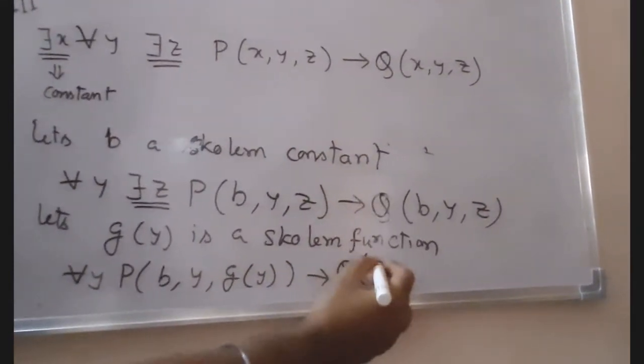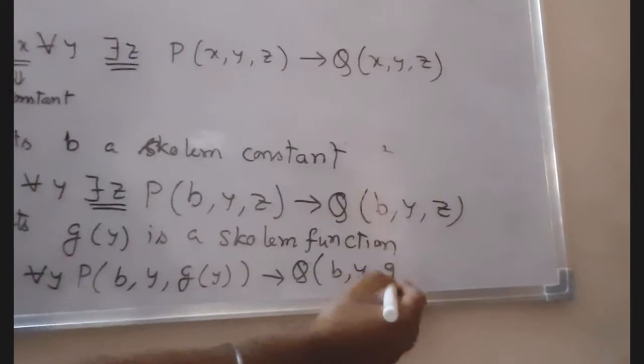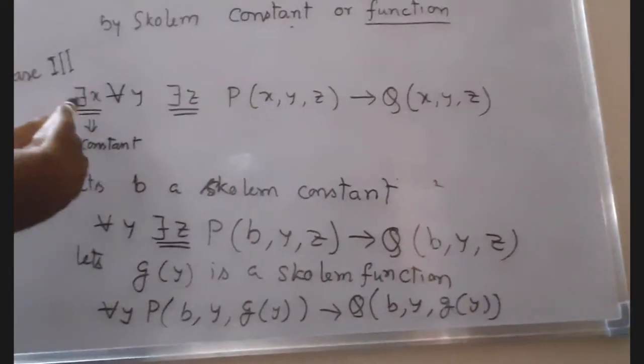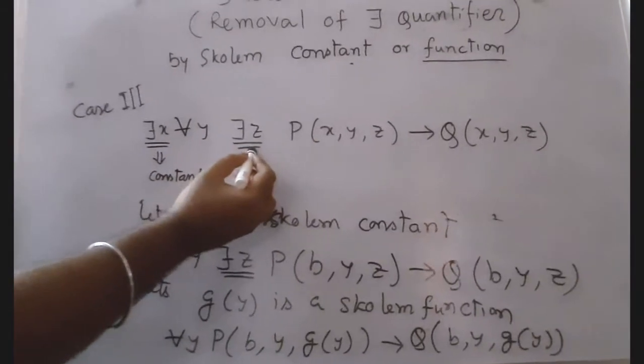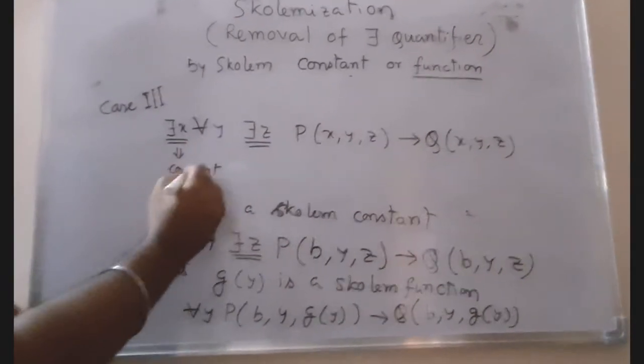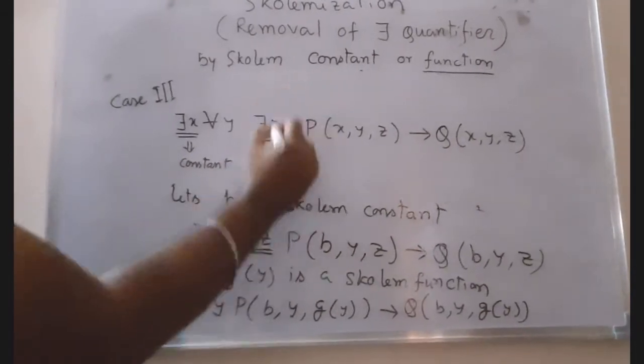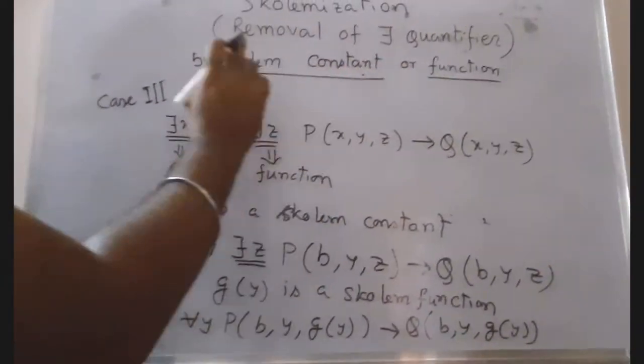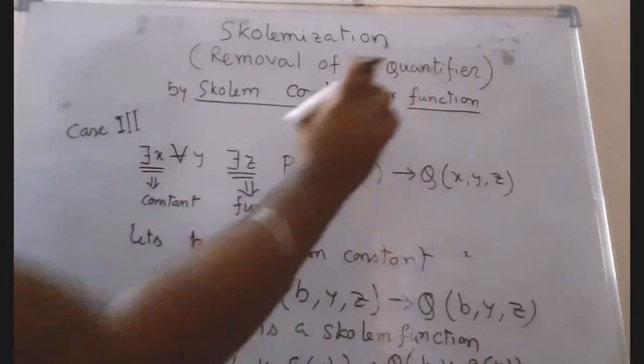...implies Q(B, Y, G(Y)). So here you can see there were two existential quantifiers: there exists X and there exists Z. X is replaced by a constant and Z is replaced by a function. This is an example where we have used both Skolem constant and Skolem function.